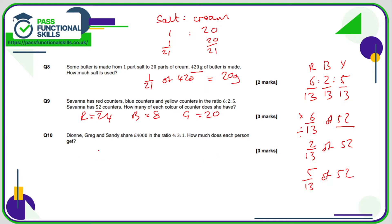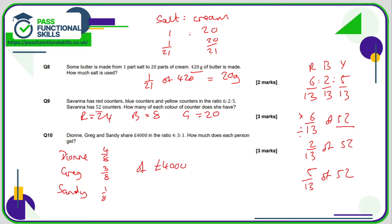Yellow is 52 divided by 13 multiplied by 5, which is 20. Question 10 is similar: Dion, Greg, and Sandy. The denominator is 4 plus 3 plus 1, which is 8. Dion gets 4/8, Greg 3/8, and Sandy 1/8 of £4,000. 4/8 simplifies to a half — half of 4,000 is £2,000. 3/8 of 4,000: divide by 8 and multiply by 3 gives £1,500. And 1/8 of 4,000 is 4,000 divided by 8, which is £500.